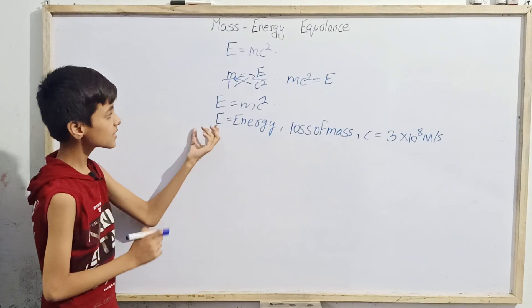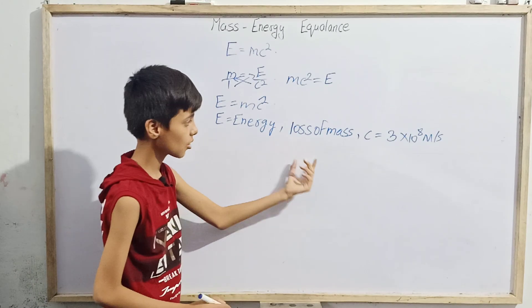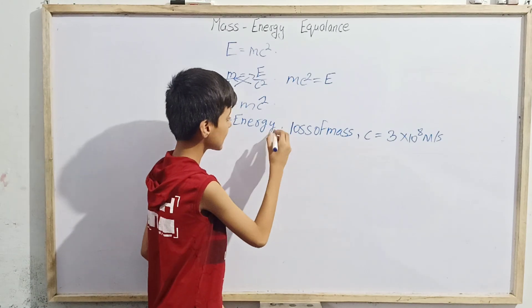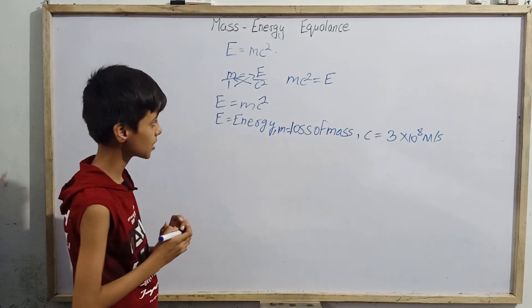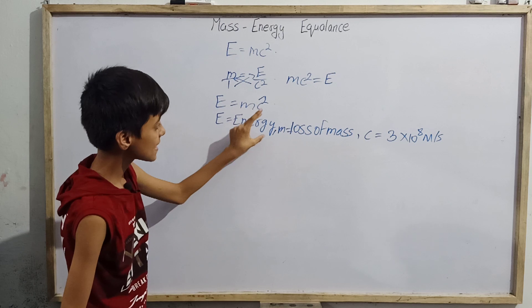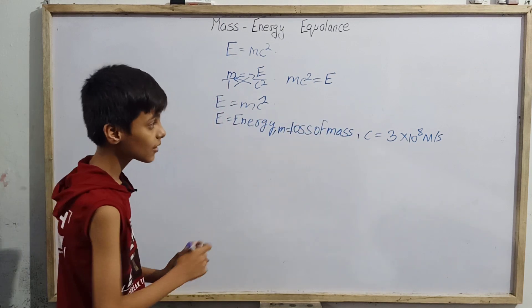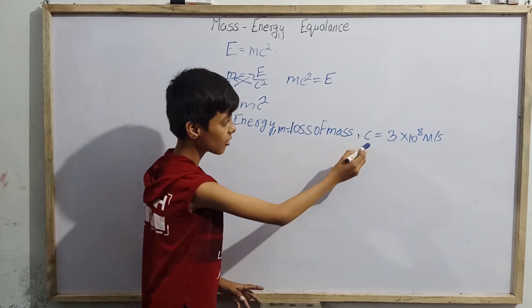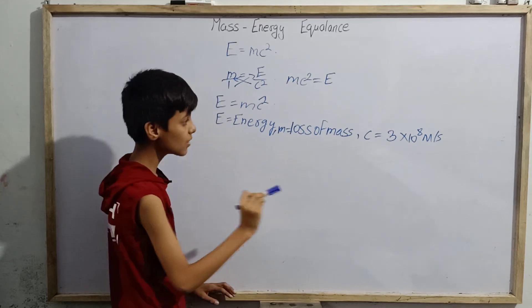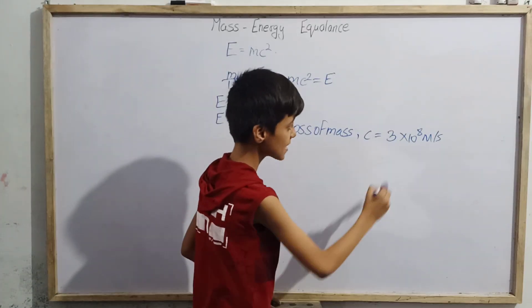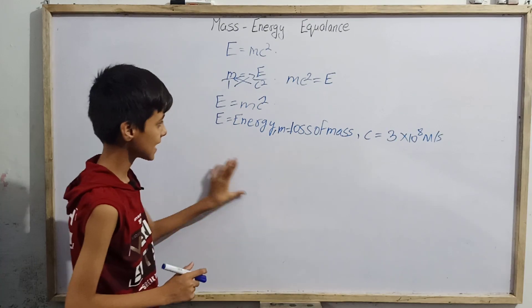So what we can say is: E is energy, m is loss of mass, and c is 3 × 10⁸ meters per second. Therefore, energy equals loss of mass times the speed of light squared. The square of c is 9 times 10 raised to the power 16 meters per second squared — that is the value of c².